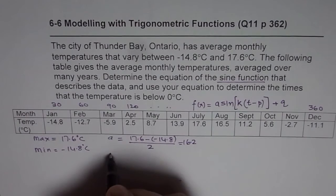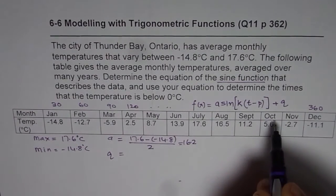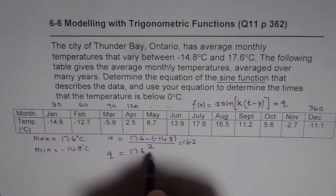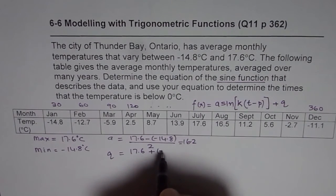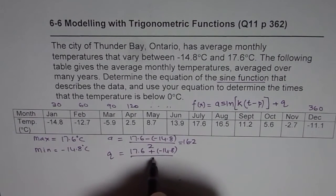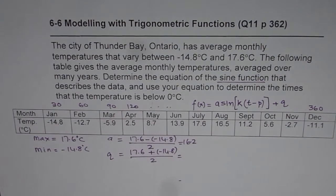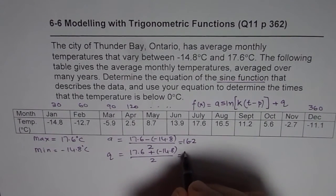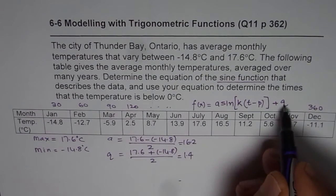So q is my variable for x's. So it is average value. So we have to add them up. 17.6 plus minus 14.8 divided by 2. That gives you what? So that is 17.6 minus 14.8 equals to, divide by 2, equals to, change to decimals, 1.4. So we get 1.4 as the value of the q.